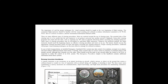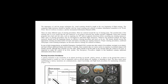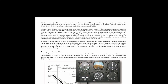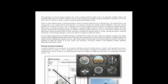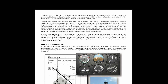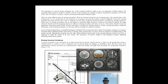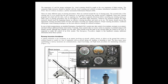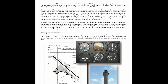There are many different types of clearing procedures, most centred around the use of clearing turns. The essential idea is to ensure that the next manoeuvre will not proceed into another aircraft's flight path. Some training programs require two 90-degree turns in opposite directions before executing any training manoeuvre. The flight instructor should teach an effective clearing procedure and insist on its use. The learner should execute the appropriate clearing procedure before all turns and before any training manoeuvre. Proper clearing procedures combined with proper visual scanning are the most effective strategy for collision avoidance.